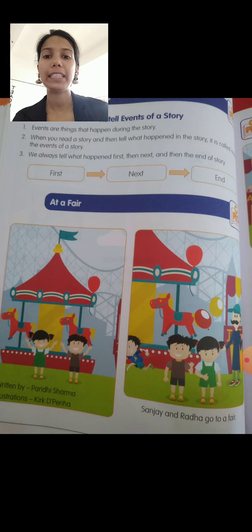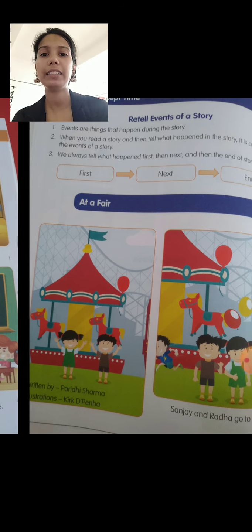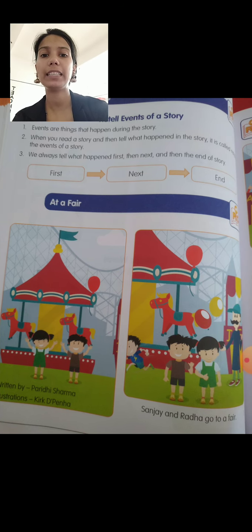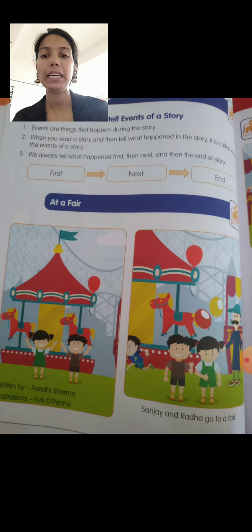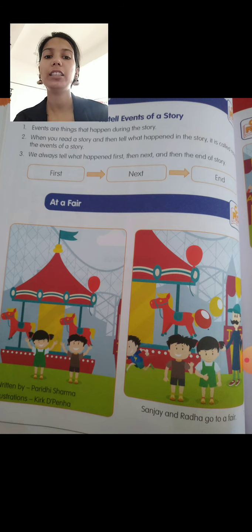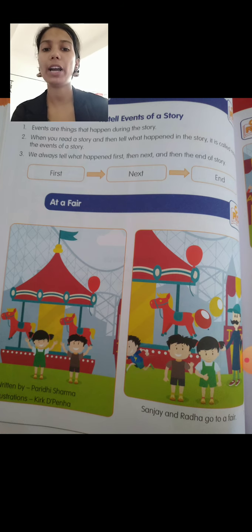Another story you have learnt in this unit is At a Fair, written by Paridhi Sharma. It is a story of a girl named Radha and a boy named Sanjay.